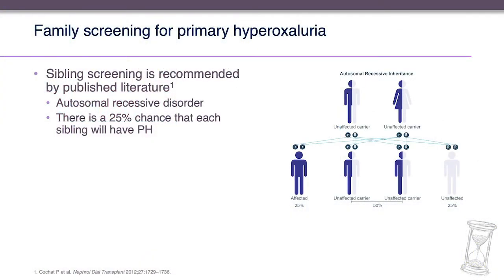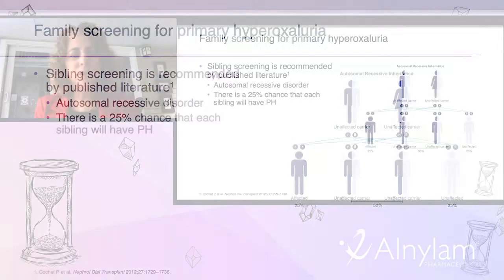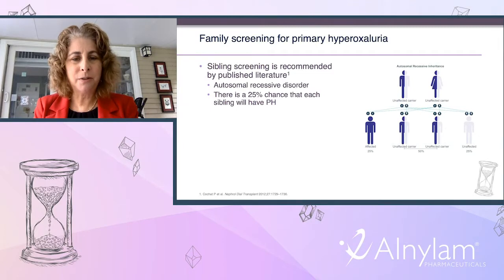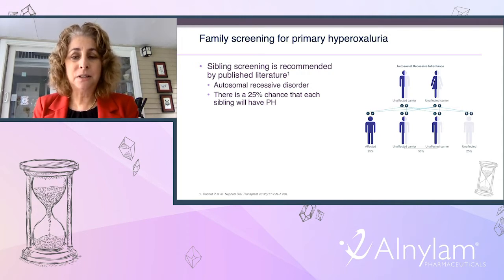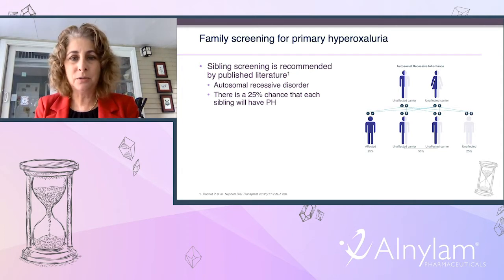Primary hyperoxaluria is an autosomal recessive disorder, meaning each sibling of the index patient has a 25% chance of having primary hyperoxaluria. It is critical after diagnosing the first patient to screen all additional siblings with urine oxalate—24-hour or random urines—as well as an ultrasound. This provides the chance to diagnose primary hyperoxaluria potentially before the patient has any kidney stones or chronic kidney disease.